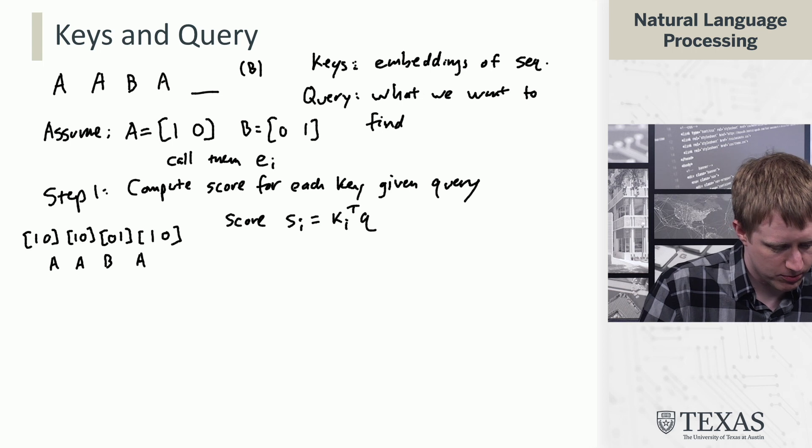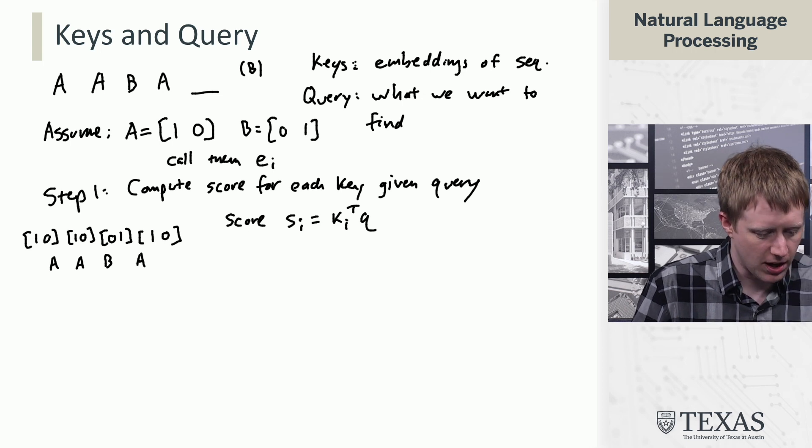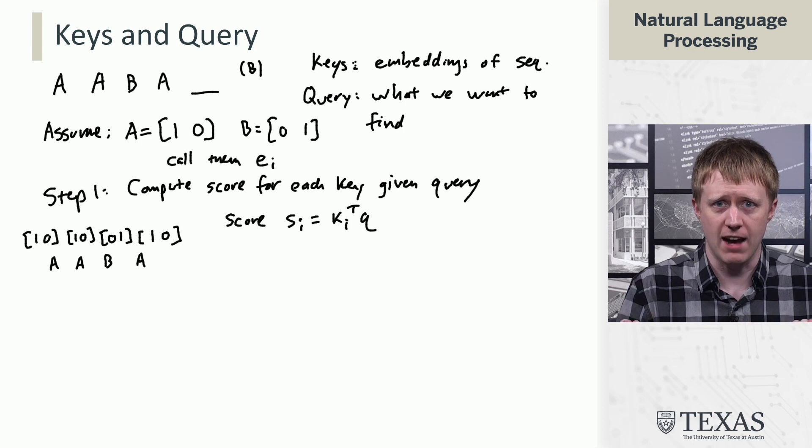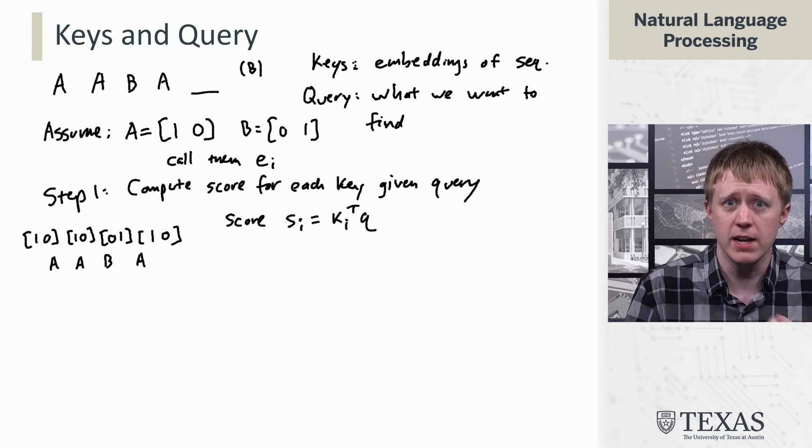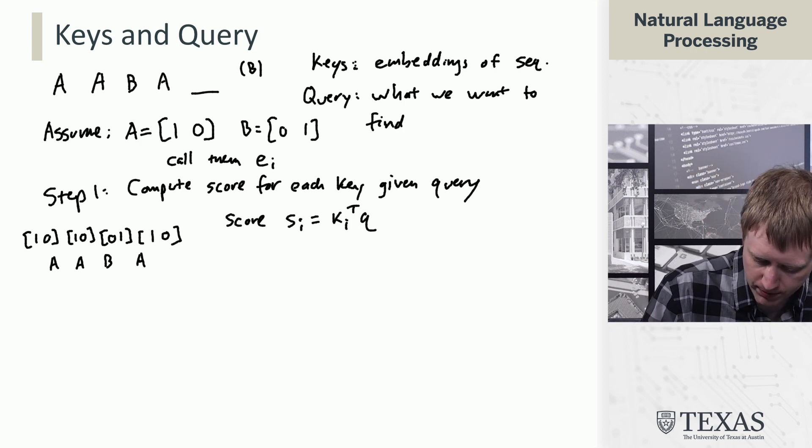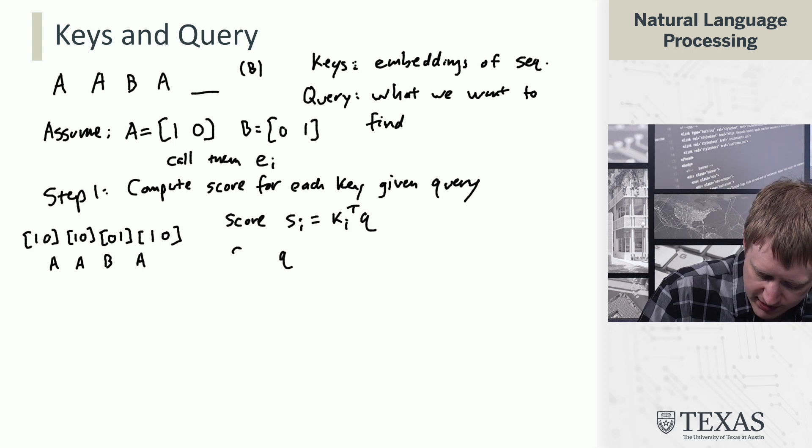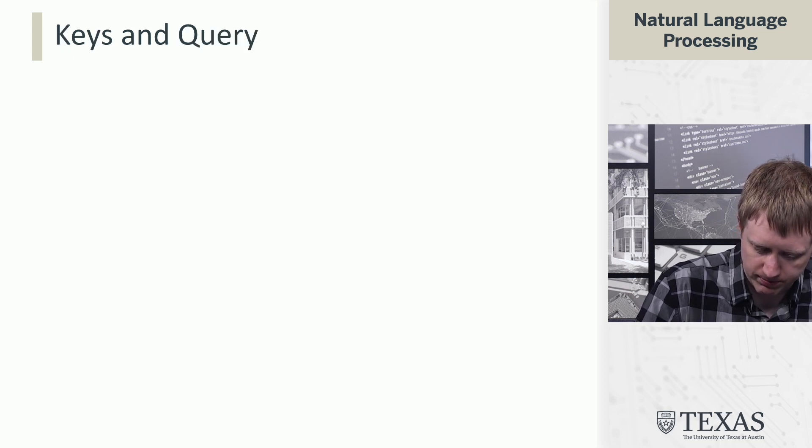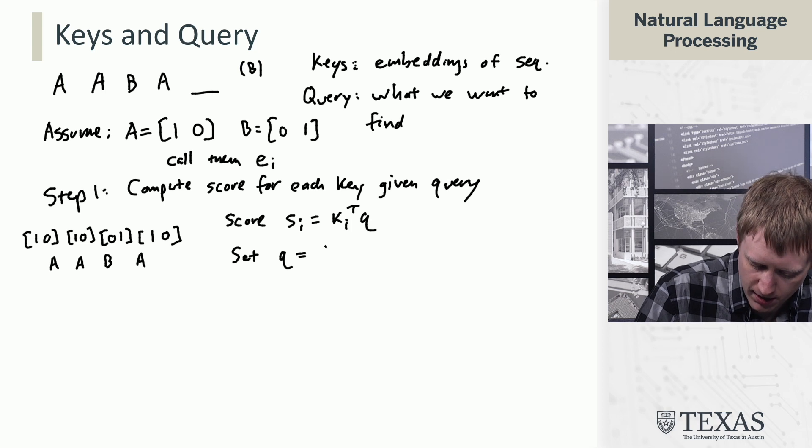So, this representation allows us to basically say, okay, what are things that have high dot product with our query? Let's give those a higher score. And in this case, we're going to set the query equal to [0,1].